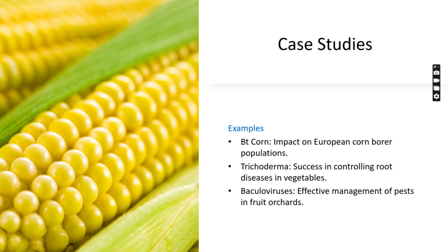Trichoderma has been successfully used to control root diseases in vegetable crops. Baculoviruses have proven effective in managing pests in fruit orchards and forests. These case studies highlight the practical applications of microbial control in modern agriculture.